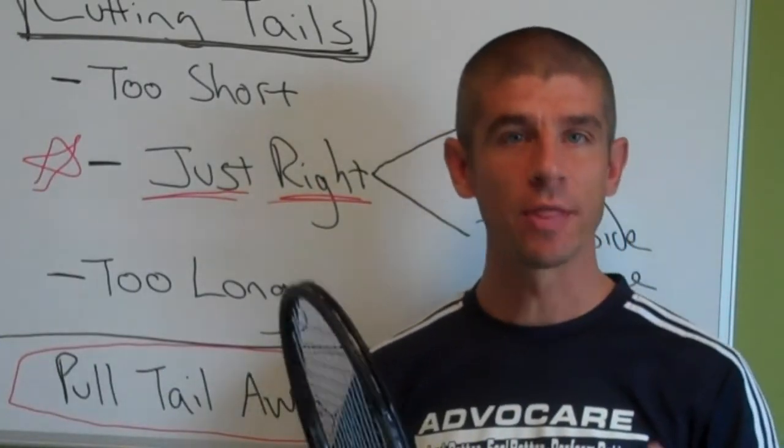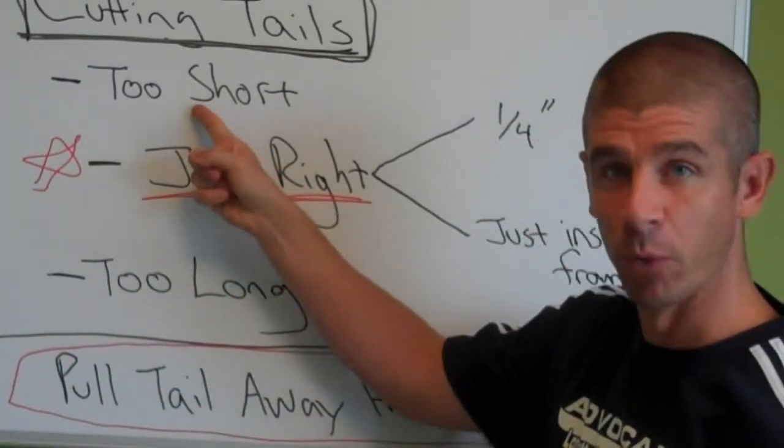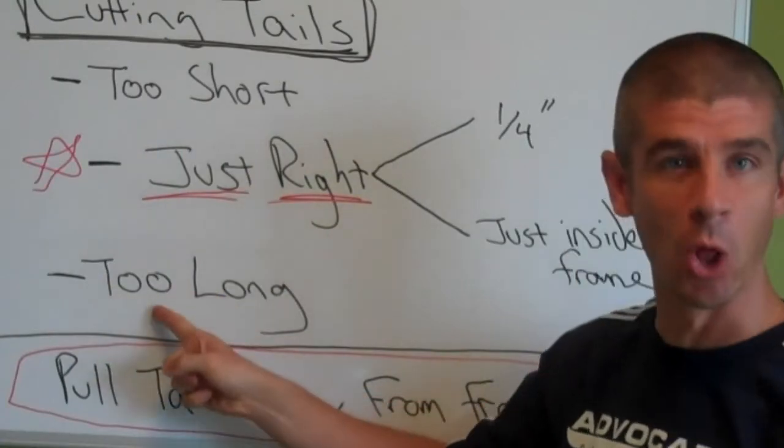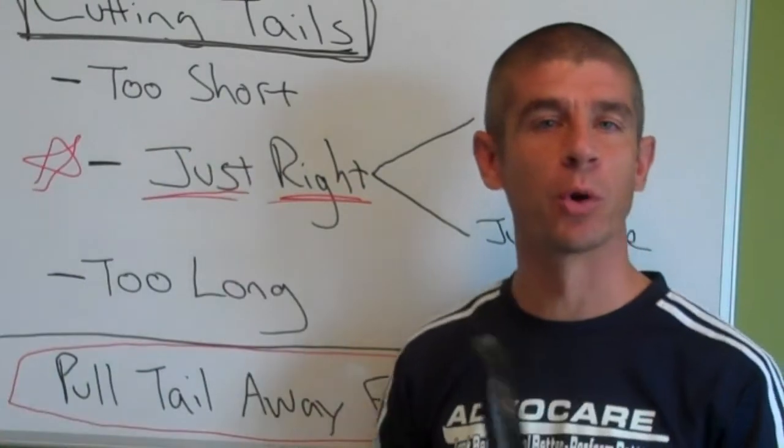And so with cutting off the tails you can do a couple of things, or three things. You can do it too short, you can do it too long, or you can do it just right. And let's talk about too short.